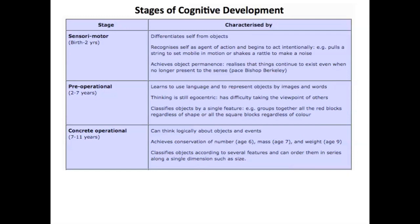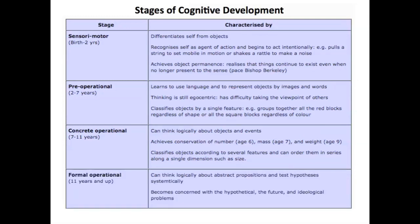The stage after pre-operational is that of concrete operational, which is roughly 7 through 11 years. During this time, children begin to think logically about objects and events. They have conservation of number and begin to understand mass and weight. They classify objects according to several features, developing the ability to handle things at a more complex level. The next and last stage Piaget identified was formal operational, 11 years and up, in which they think logically about abstract propositions, test hypotheses, and become concerned with the hypothetical, the future, and ideological problems.